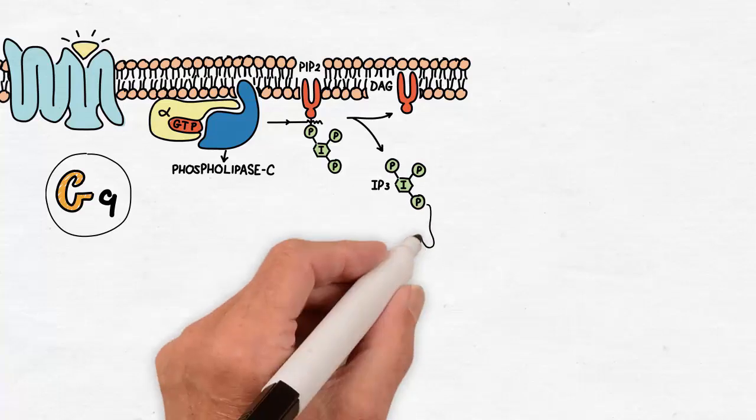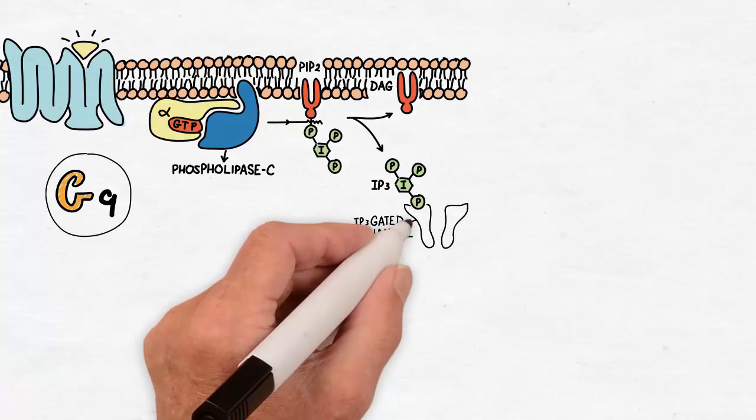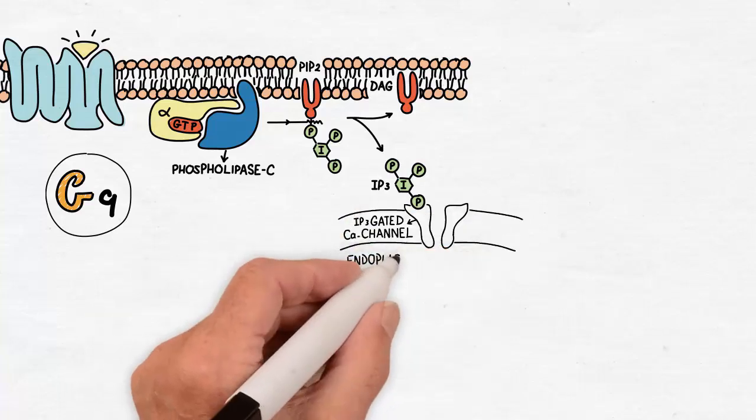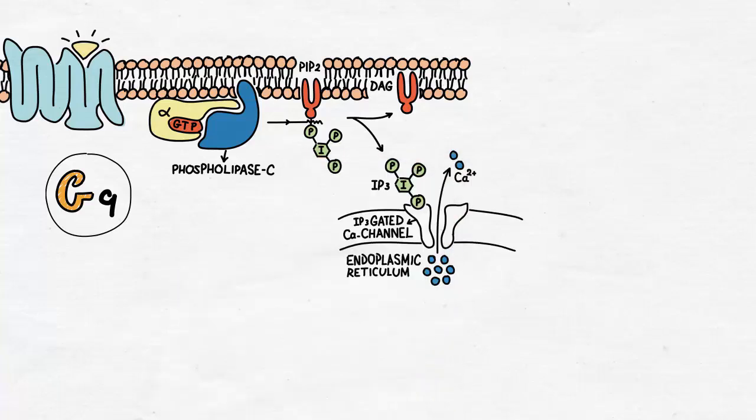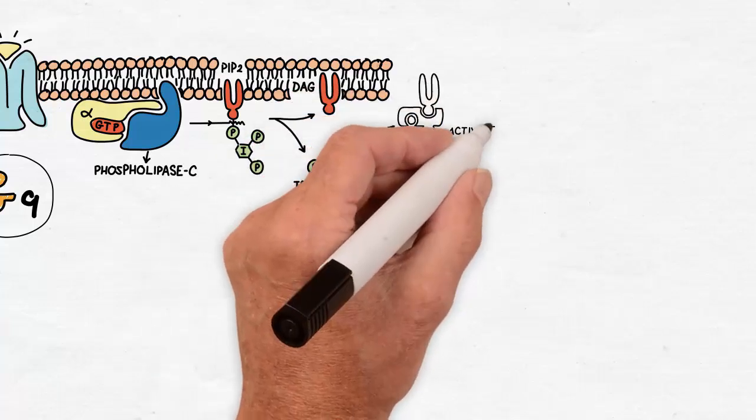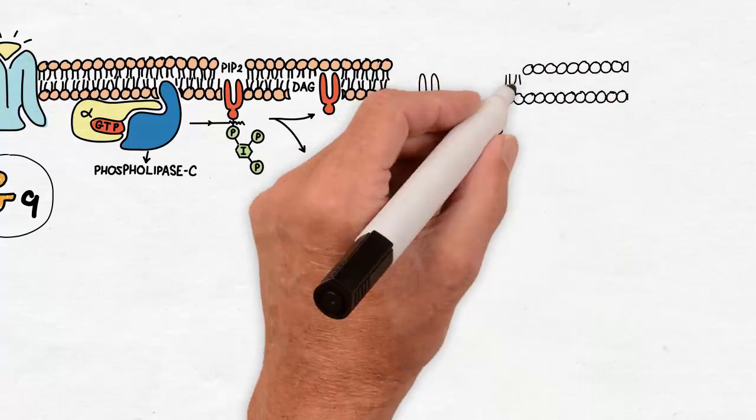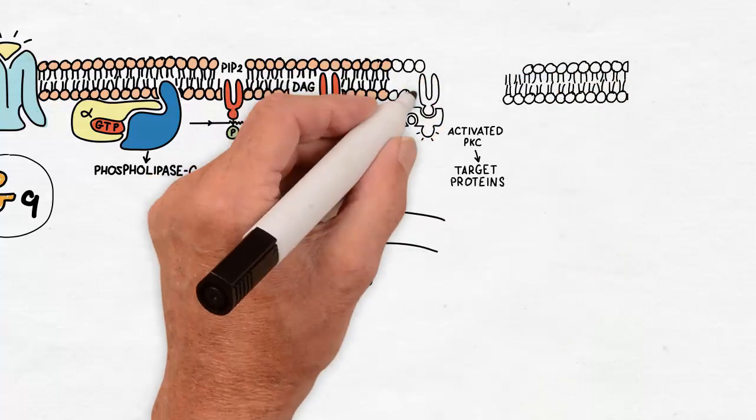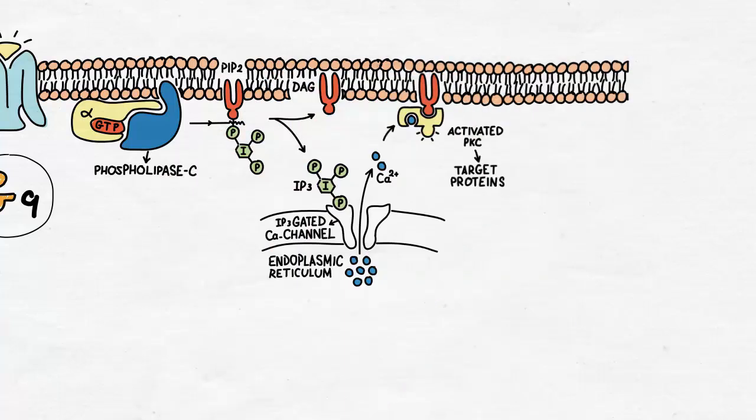The IP3 is released into the cytosol and binds to an IP3 gated channel in the endoplasmic reticulum causing release of sequestered calcium. Calcium and DAG together activate the calcium-dependent protein kinase named protein kinase C or PKC. PKC catalyzes phosphorylation of cellular proteins that mediate cellular responses.